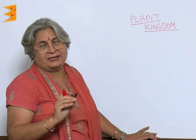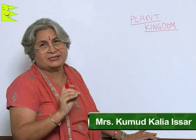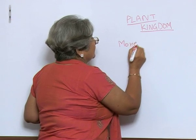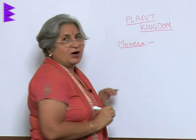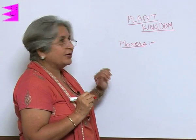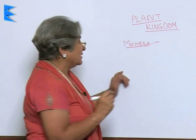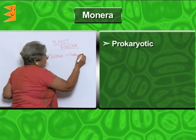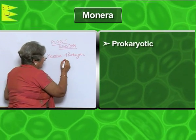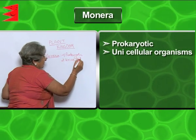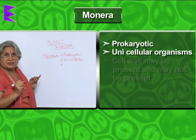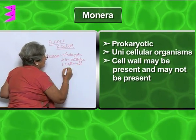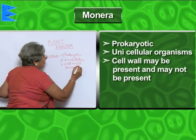The plant kingdom is divided like this. The first group is of the simplest organisms and it is called Monera. The organisms of the Monera group — we should not say plants — the organisms are prokaryotic, that is, they have a primitive nucleus. They are unicellular, and they may have a cell wall or they may not have — cell wall present or absent.